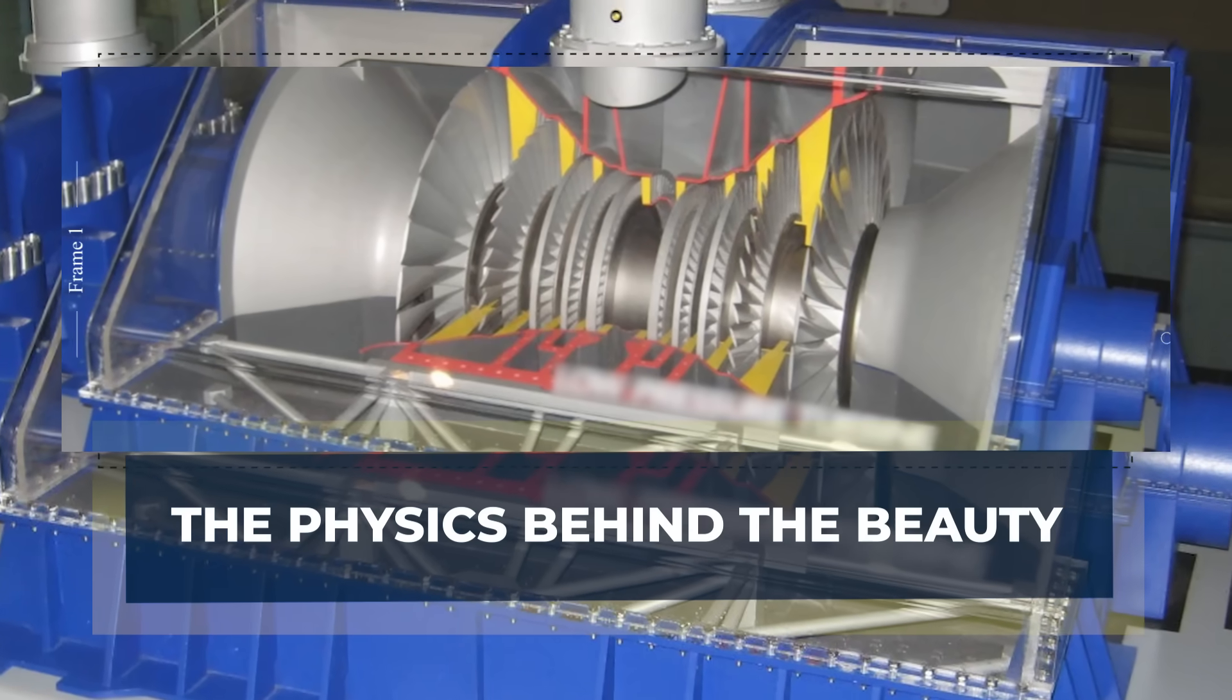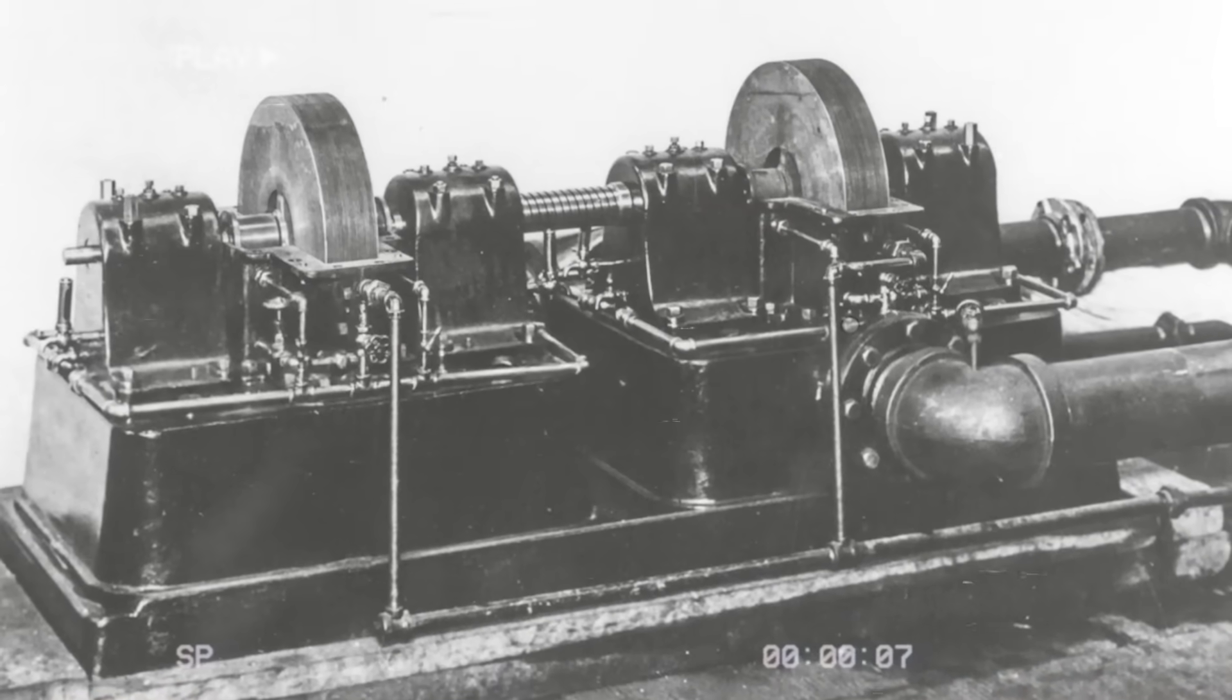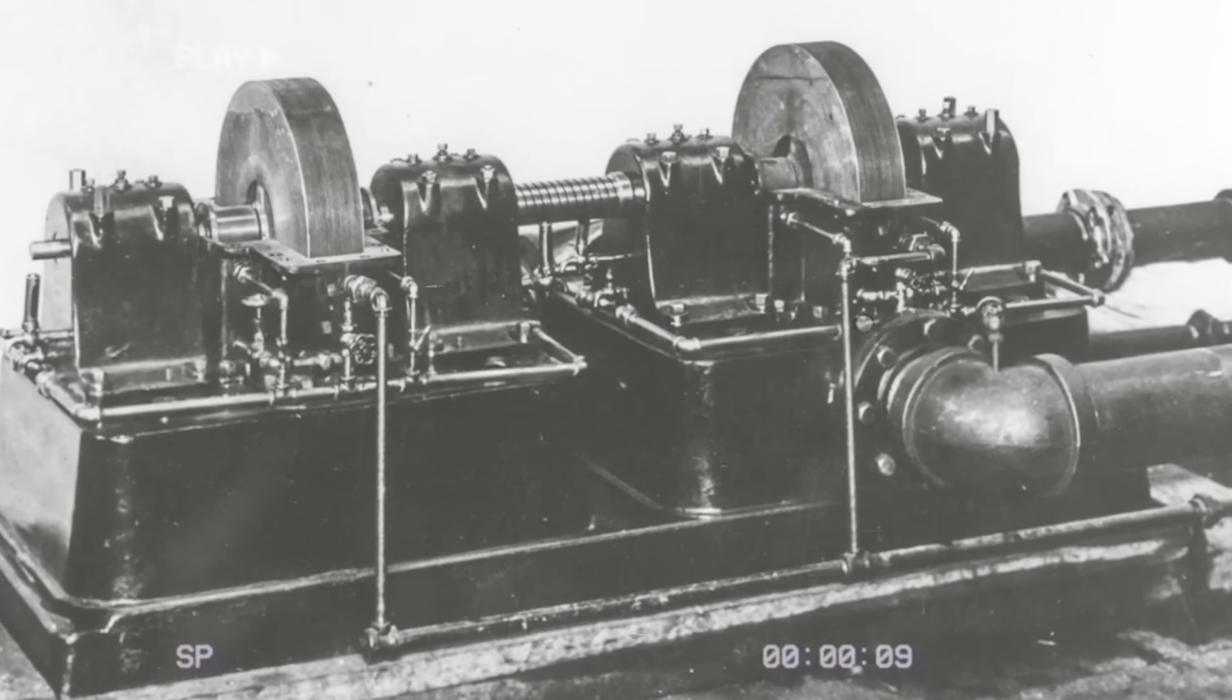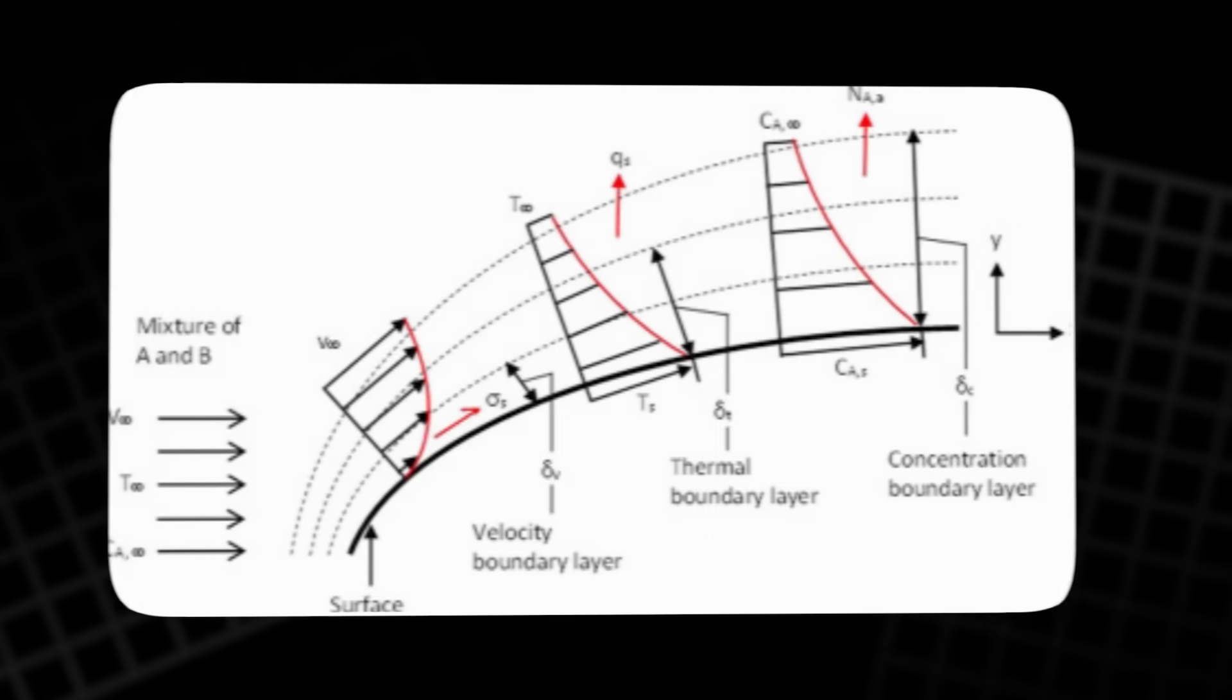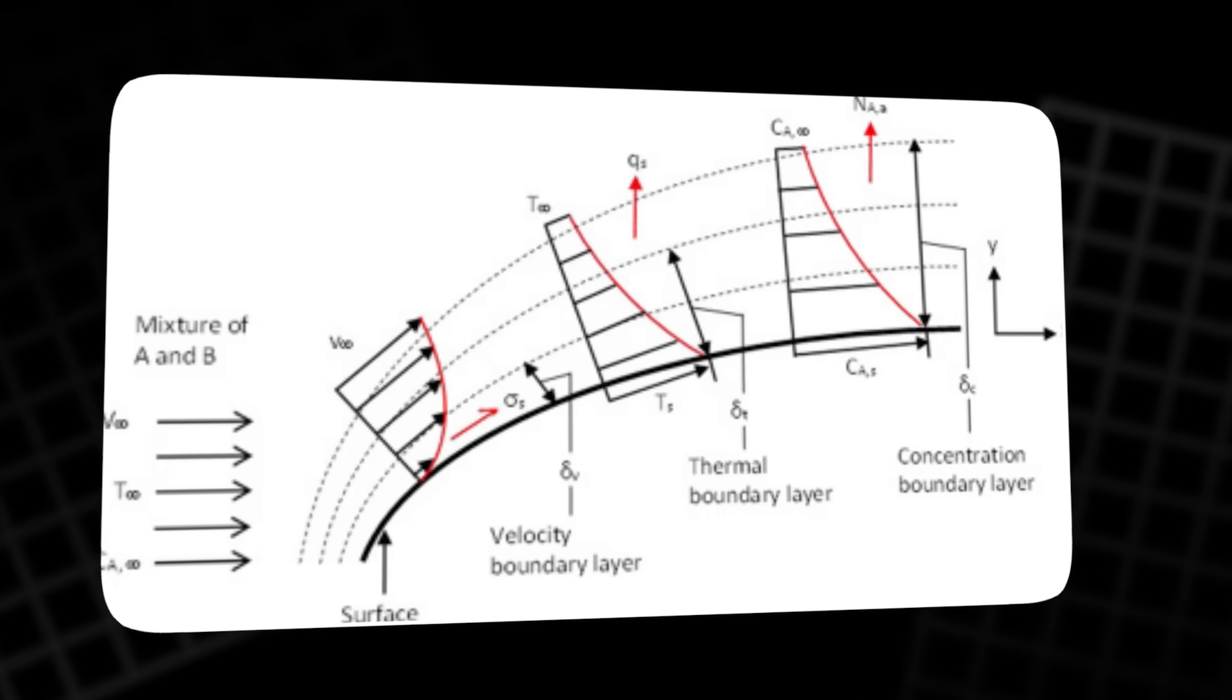The physics behind the beauty. The genius of the Tesla turbine lies not only in its engineering, but in its physics. Instead of brute force, it relies on the fluid's boundary layer, the thin region near a surface where velocity transitions from zero to the freestream value.